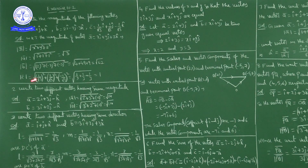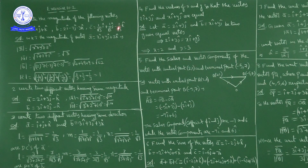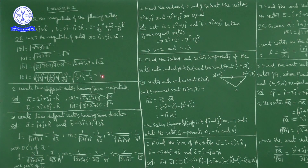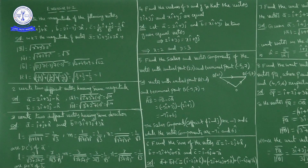Magnitude of c̅: c̅ = (1/√3)î + (1/√3)ĵ − (1/√3)k̂, so magnitude = √((1/√3)² + (1/√3)² + (−1/√3)²) = √(1/3 + 1/3 + 1/3) = √(3/3) = √1 = 1. So magnitude of c̅ is 1, meaning c̅ is a unit vector.